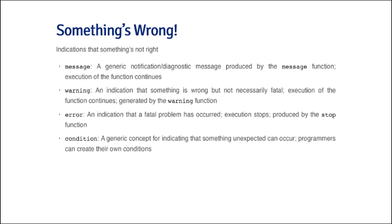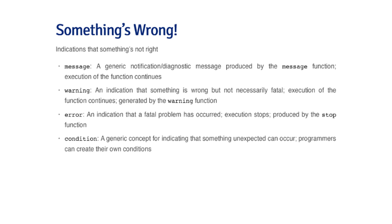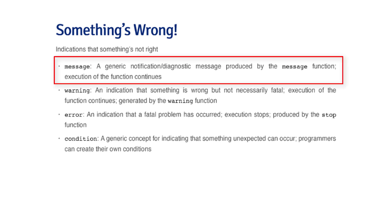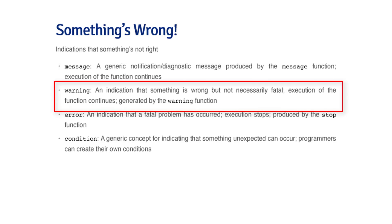So how do you know that there's a problem? There are a couple of indications that R will produce that give you the sense that something is wrong. There are three main types: the first is a message. A message is a very tame notification — it could be a diagnostic message that something happened, but it could be nothing. The message won't stop your function from executing; execution will continue.